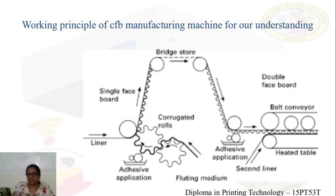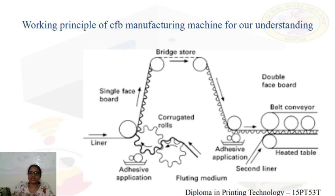The adhesive helps the liner from the other side get in contact, forming a single-faced board. As soon as the single-faced board — consisting of a fluting medium and a single liner — passes through a bridge store, it continues to the extended section of the machine. On the other side, adhesive is applied over the tips of the fluted medium, and the second liner is made to pass through the belt conveyors so that two liners and the medium are achieved.